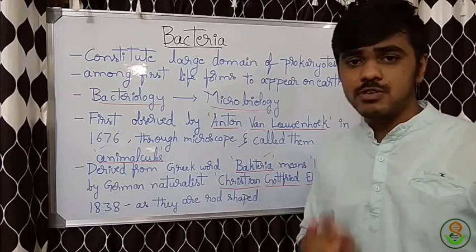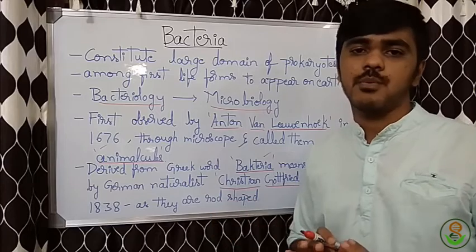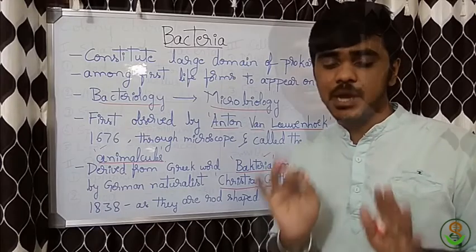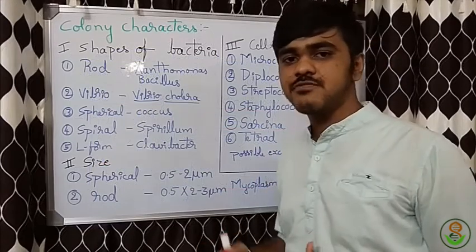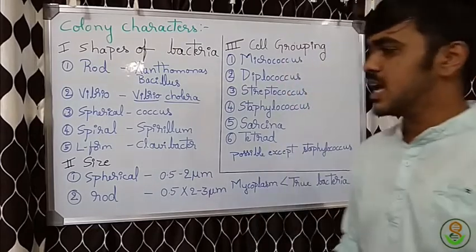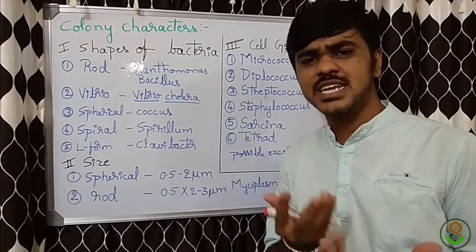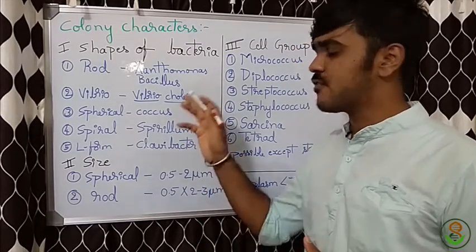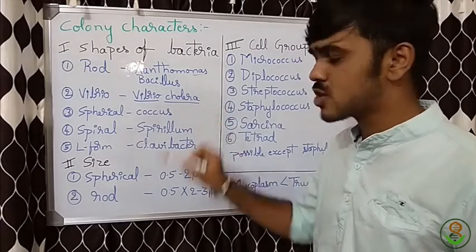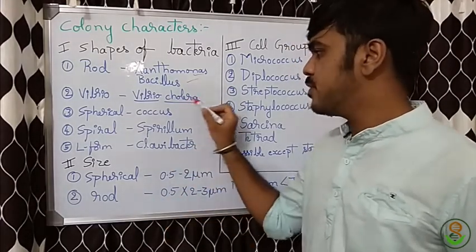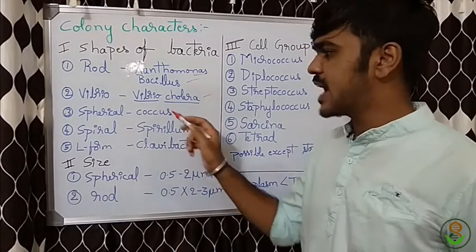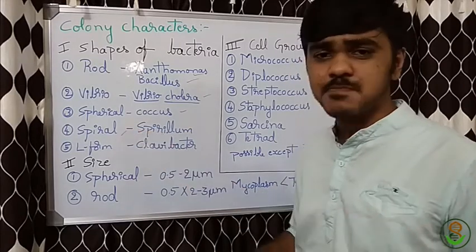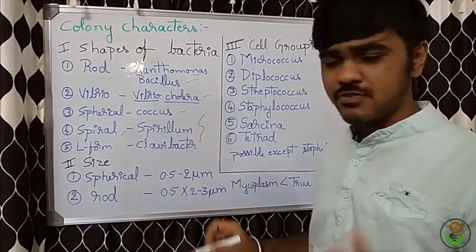Whenever we use the word 'bacteria' it is a plural form; the singular form is 'bacterium.' Now let's look at the colony characters of bacteria. Based on shapes, we can find rod-shaped bacteria — examples are Xanthomonas, Bacillus, Vibrio. Spherical-shaped bacteria — the best example is coccus. Then spiral-shaped bacteria, which look like a spiral, example is Spirillum.